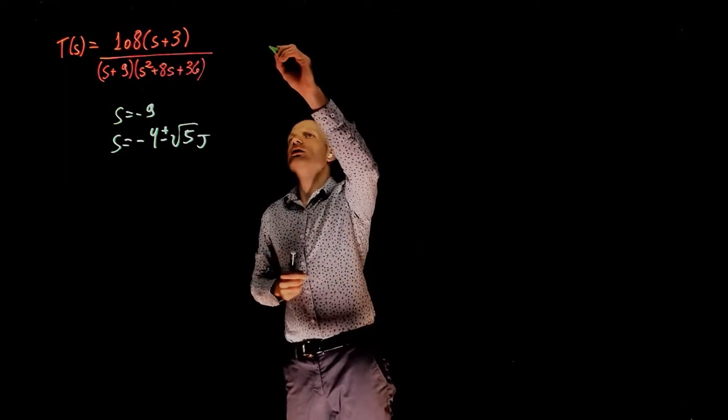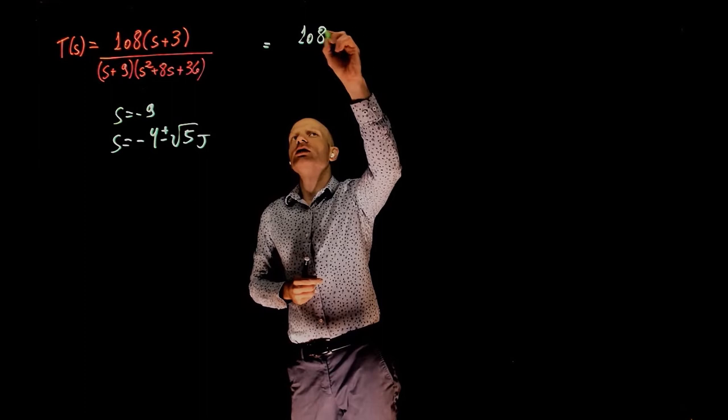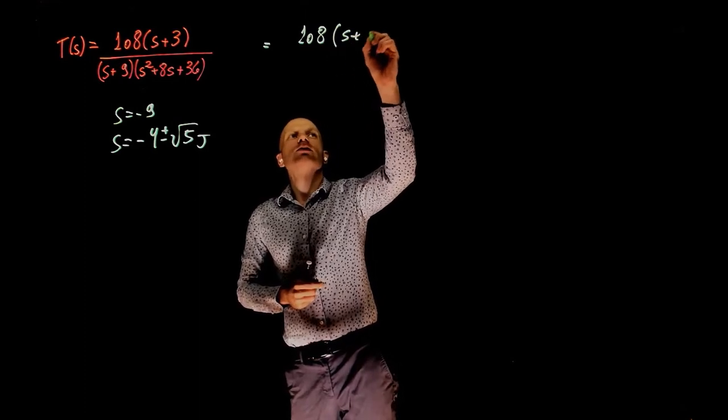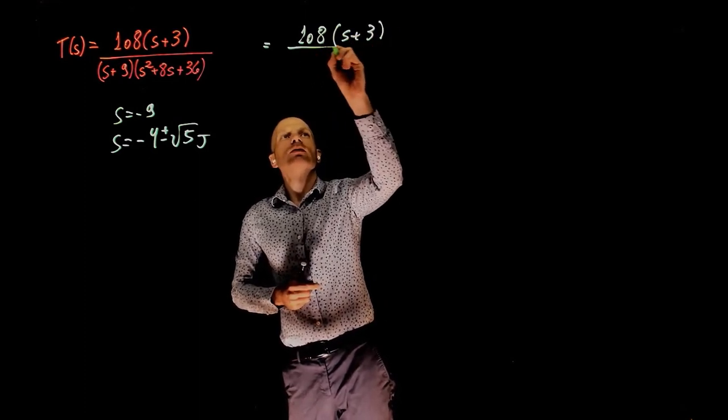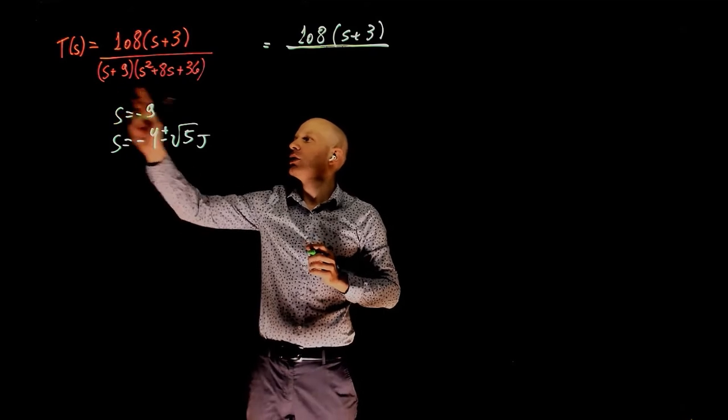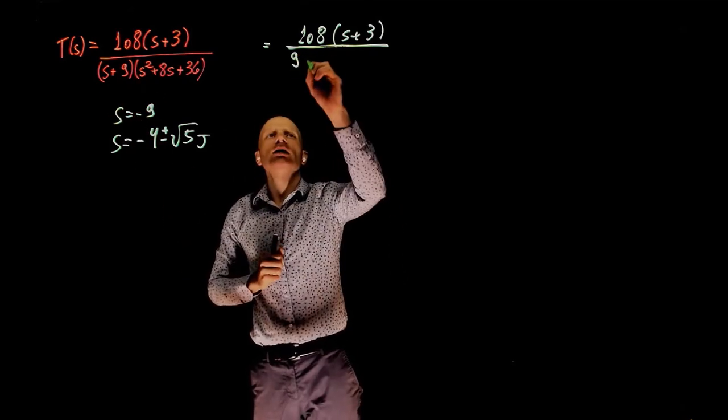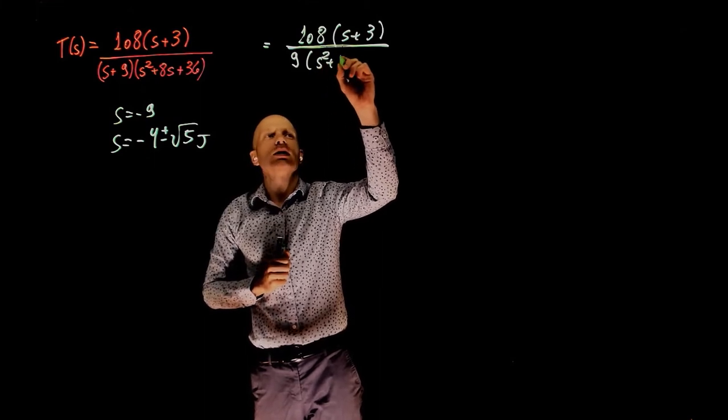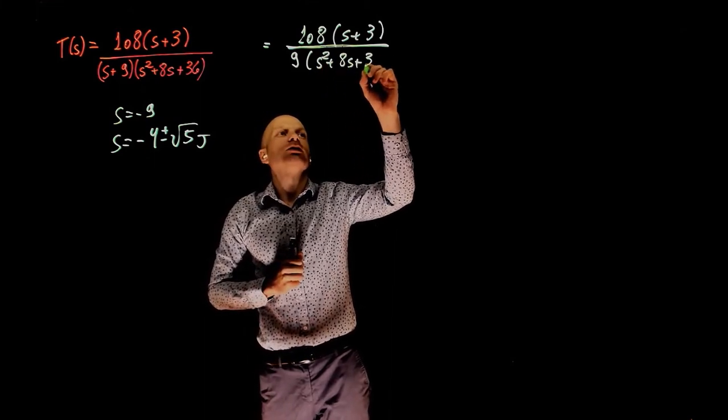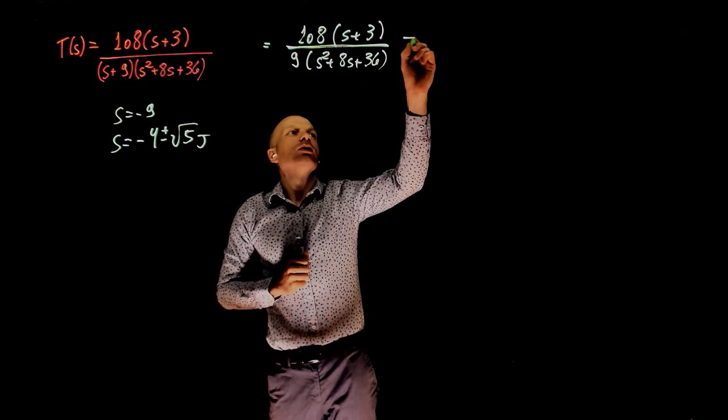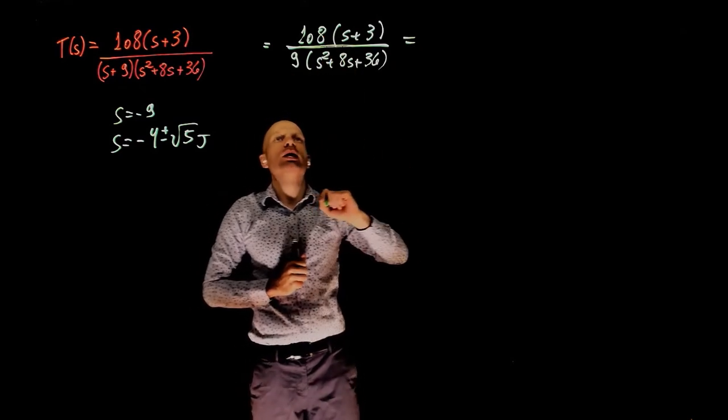We can now rewrite this expression as 108 times s plus 3. Now neglecting this pole at negative 9, we set this s to 0. We have 9 times s squared plus 8s plus 36. Here you can simplify 108 divided by 9.